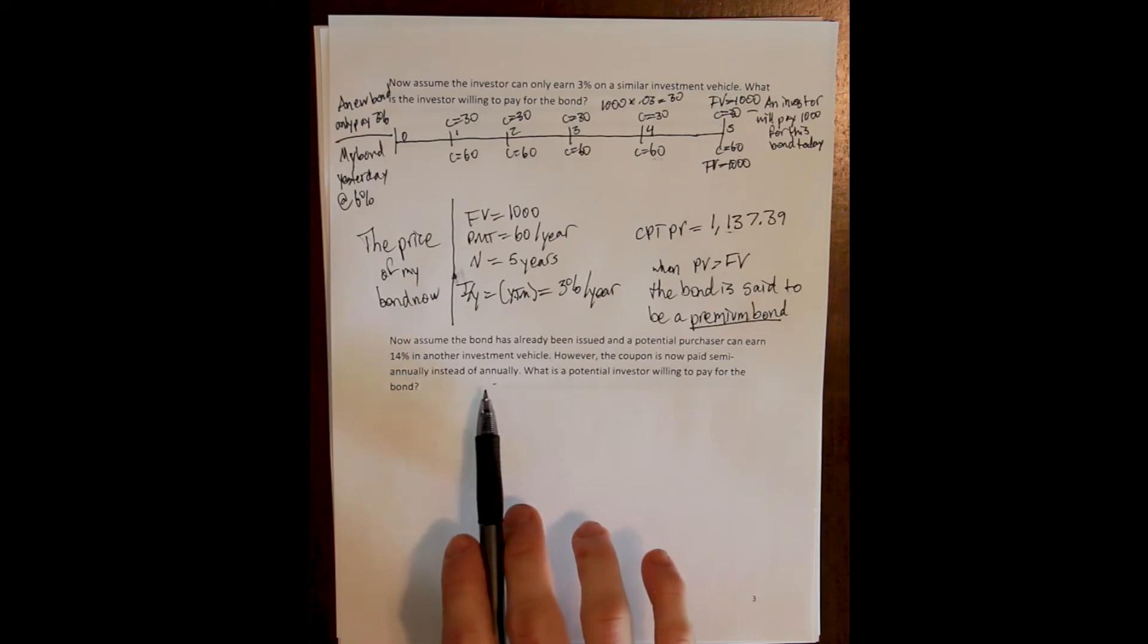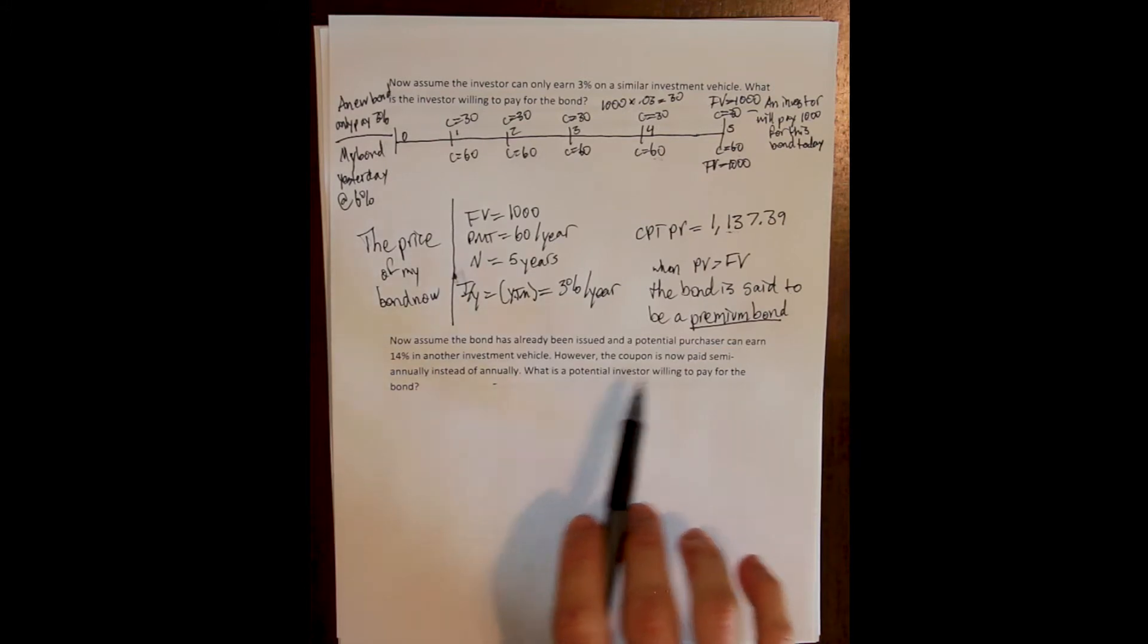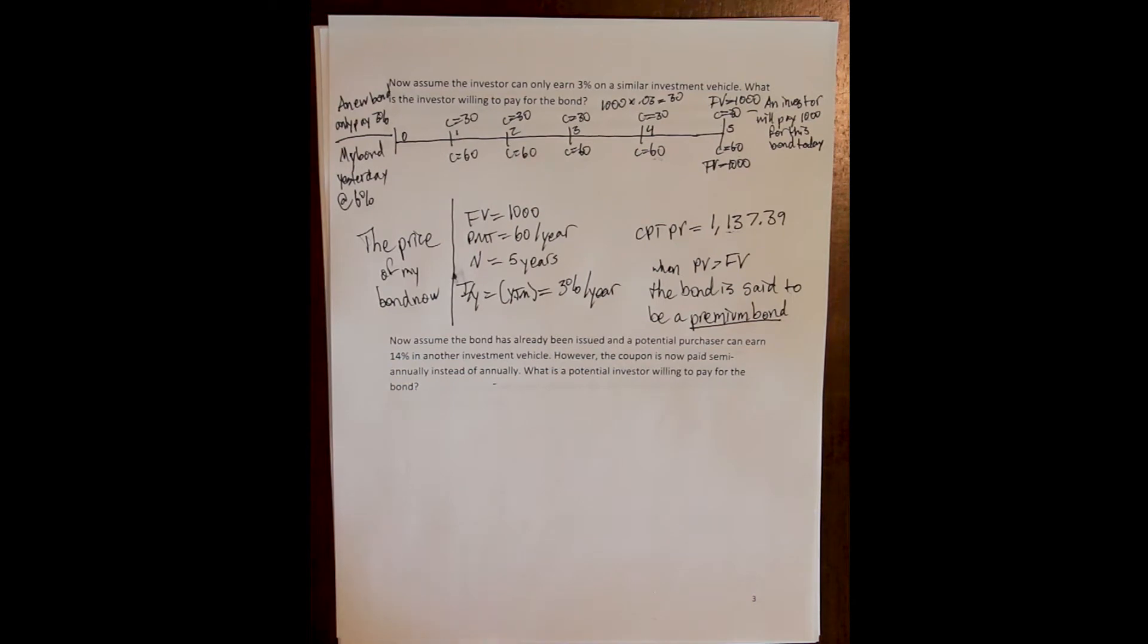And this is the most common way that bond coupons are paid, semi-annually. So we just want to make this a little more realistic. So semi-annually means twice a year instead of once a year. What's a potential purchaser willing to pay?